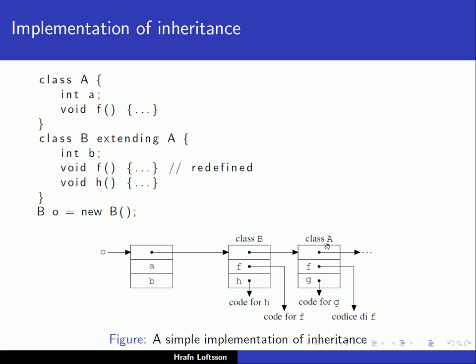In class A, similarly, we have a pointer to the code for F and a pointer to the code for G. Notice that the method F has been redefined in class B, so we are talking about two different methods: the one defined in class B and the one defined in class A.